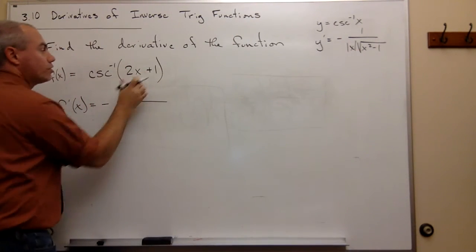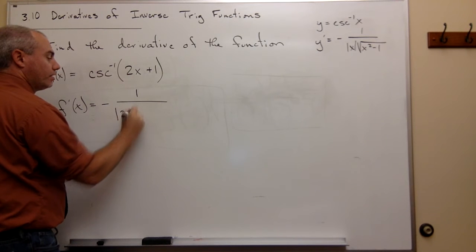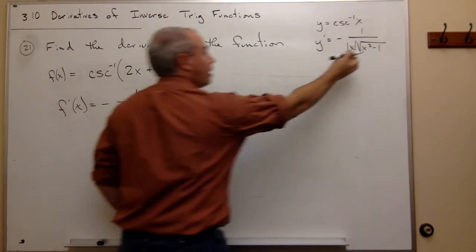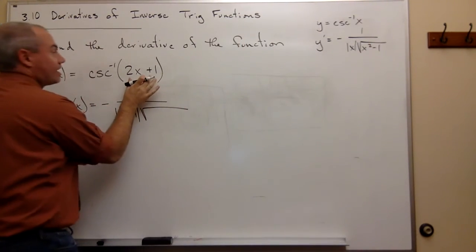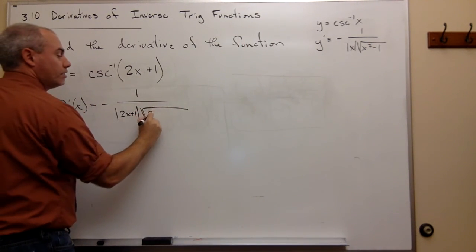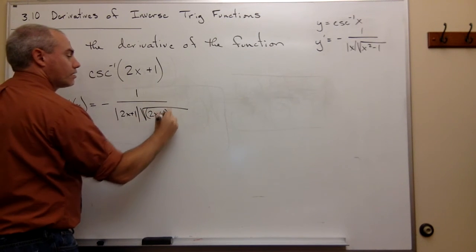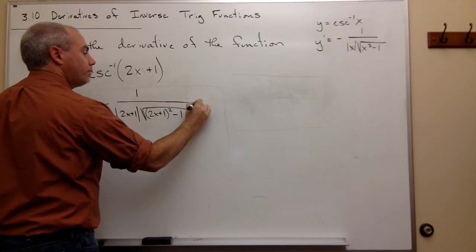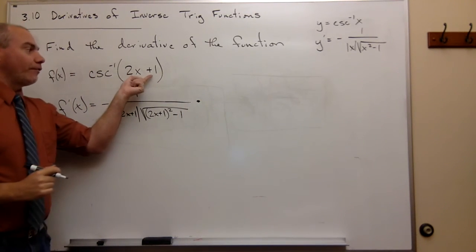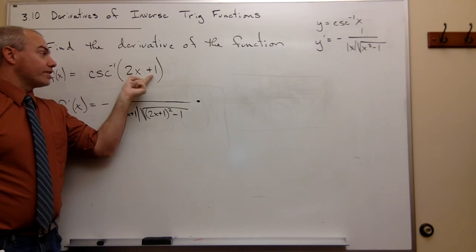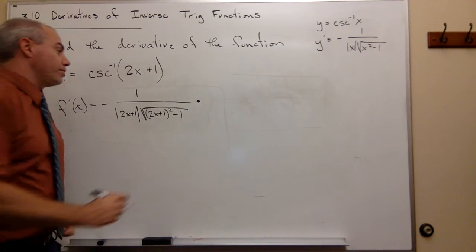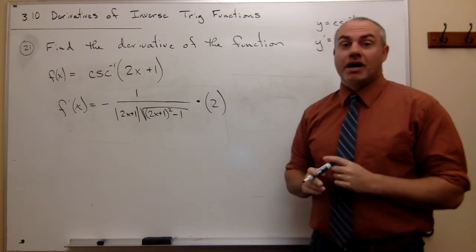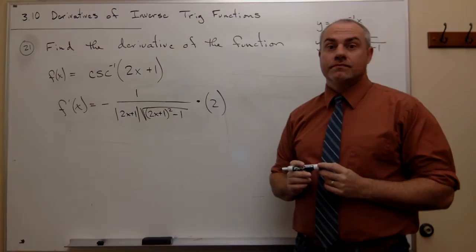In this case it's 2x plus 1, so we get negative 1 over the absolute value of (2x + 1) times the square root of (2x + 1) squared minus 1. Then we multiply by the derivative of the inside, which is 2. So we just multiply by 2 and we have our derivative.